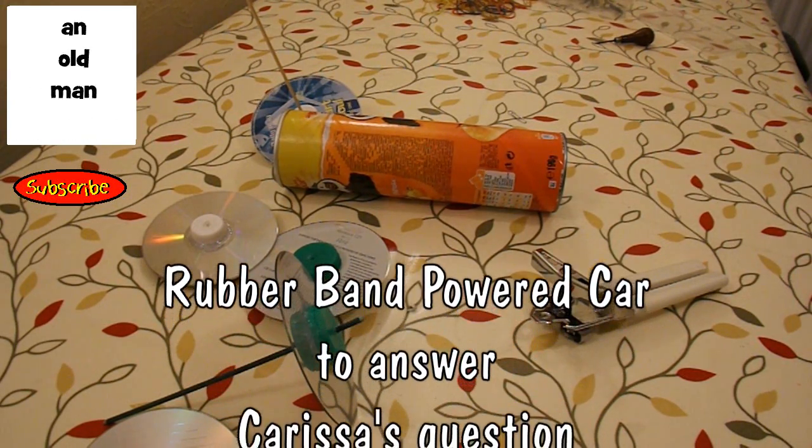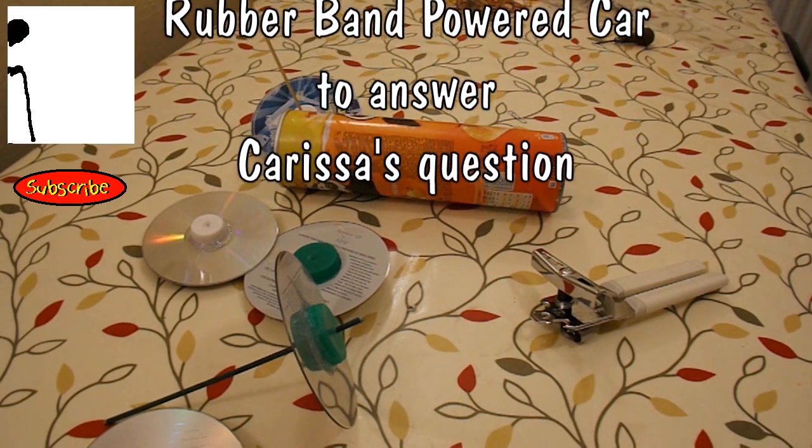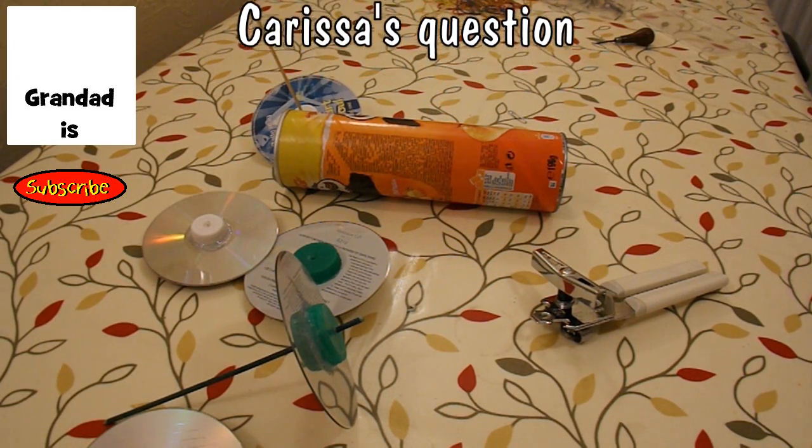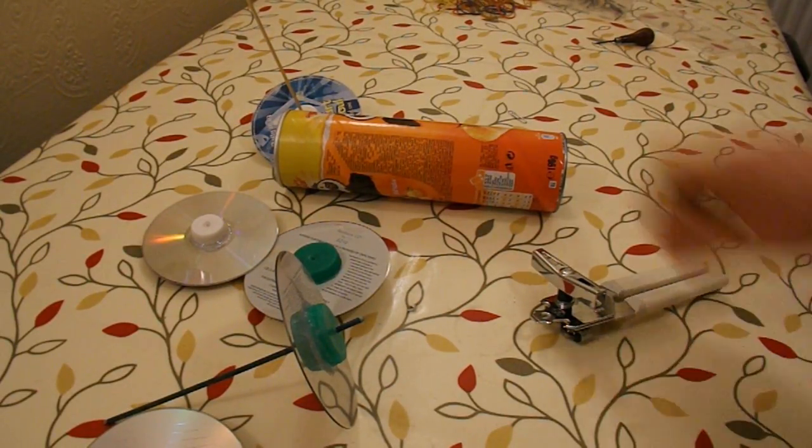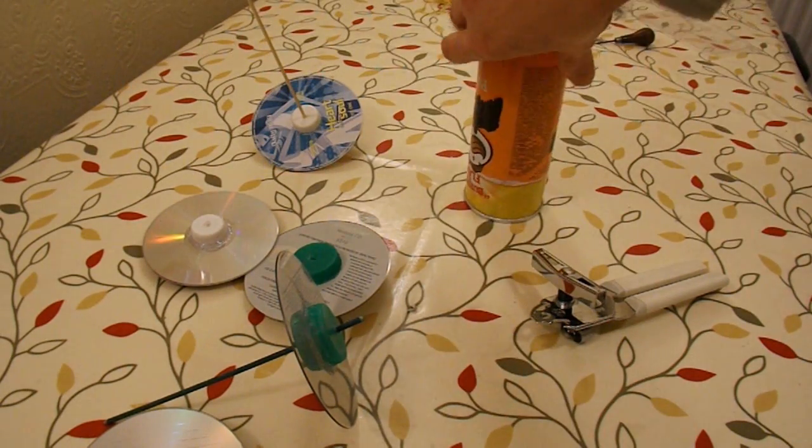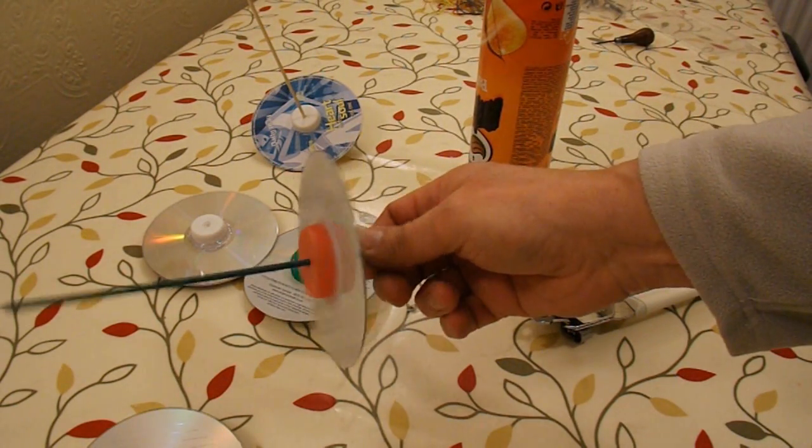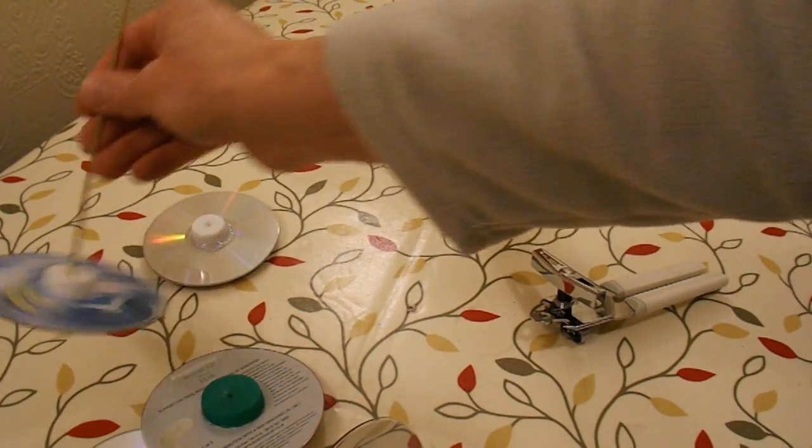Hi guys, just going to do a very quick rubber band powered car, especially for Carissa who's asked me in the comments what the problem is with her car, she can't get it to go. So I'm going to make it out of this cardboard tube, I've already got some wheels on some barbecue skewers so I'm going to use them.